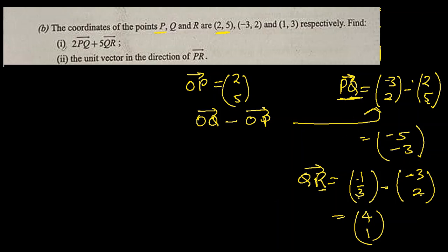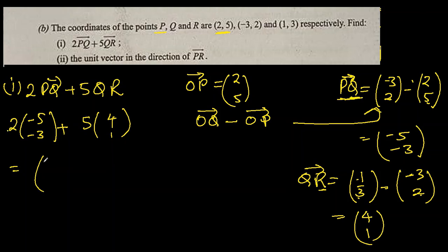Now we can go to our question which was 2PQ plus 5QR. So 2 times PQ was (-5, -3) plus 5 times QR which is (4, 1). It will be equal to 2 times -5 is -10 plus 5 times 4 is 20, 2 times -3 is -6 plus 5 times 1 is 5. So the answer is -10 plus 20 is 10, -6 plus 5 is -1. That is 2PQ plus 5QR.